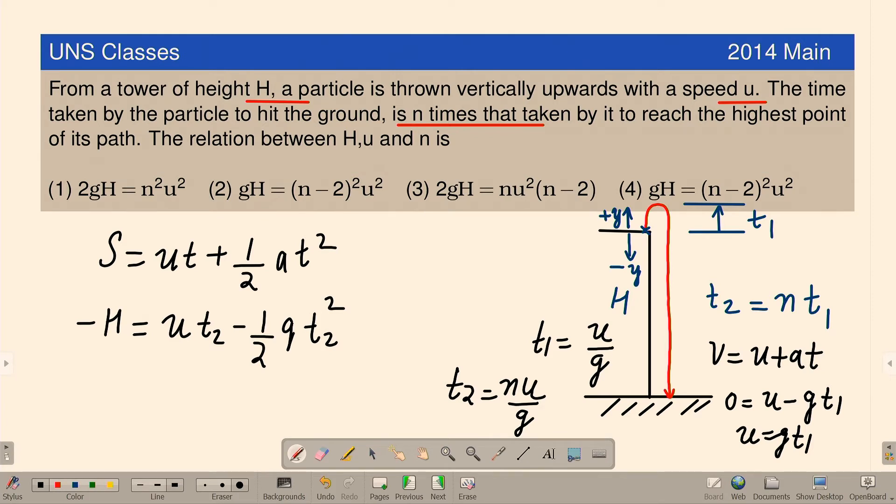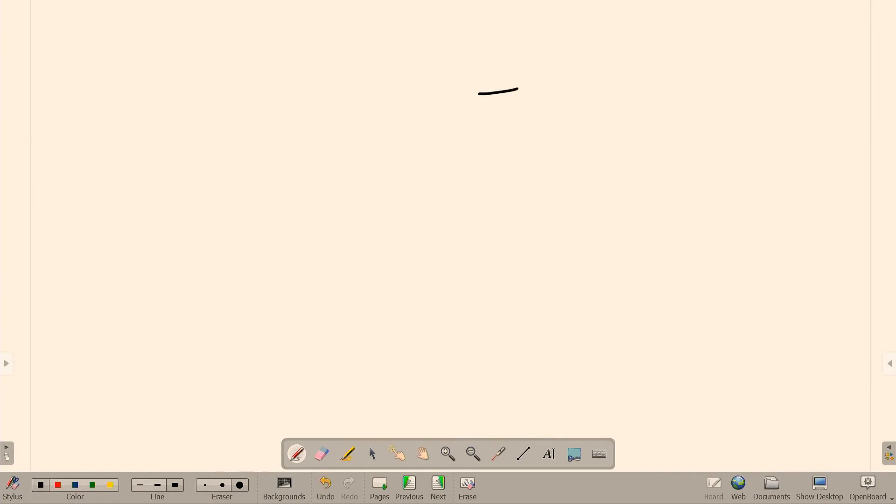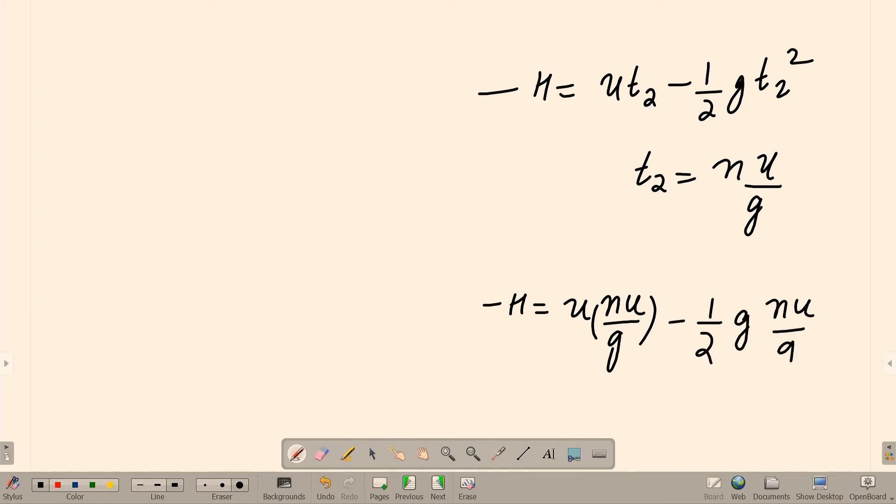Let us go to the next slide. H is equal to UT2 minus half GT2 square. Minus H is equal to UT2 minus half GT2 square. And T2 is given as N times U by G. Let us substitute that value in the expression. Minus H is equal to U multiplied by T2, T2 is NU by G, minus 1 by 2 G into NU by G the whole square.